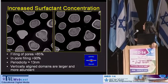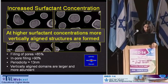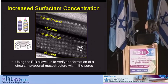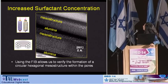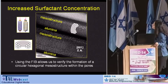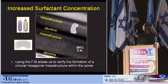The SAXS pattern obtained from this sample shows a hexagonal arrangement of the mesostructures in the pores. When we take the same sample and look at it from the side instead of from the top view, we obtain this image. Here, in black, you see again the alumina, and within the channels of the alumina you see the hexagonal mesostructure. The white dots are the surfactant domains, and they are surrounded by the silica within the pores.